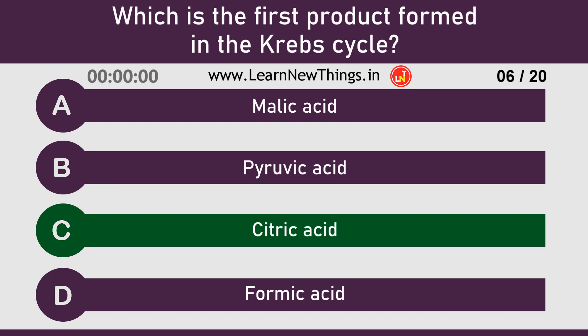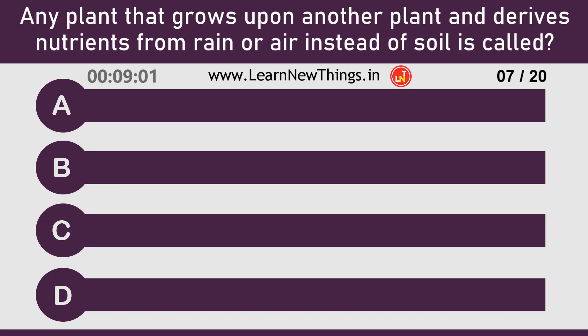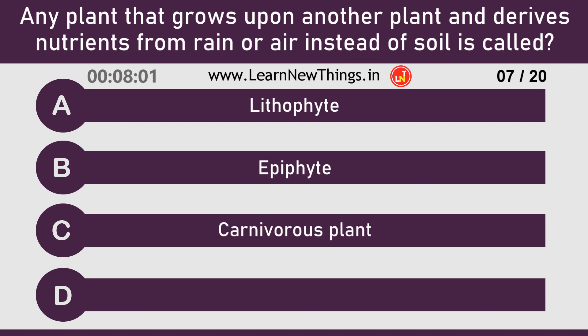Any plant that grows upon another plant and derives nutrients from rain or air instead of soil is called Epiphyte.